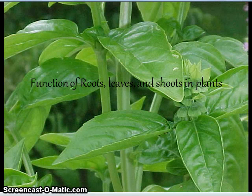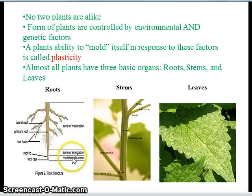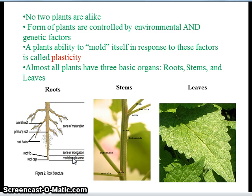The function of roots, leaves, and shoots in plants. No two plants are alike. The form of plants are controlled by environmental and genetic factors. Environmental factors include light, temperature, water, and nutrition. A plant's ability to mold itself in response to these factors is called plasticity.